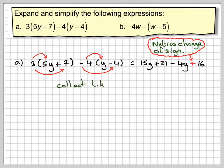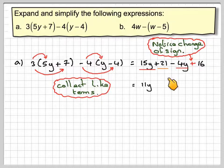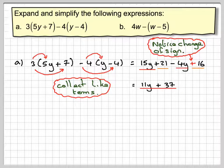Then we collect together like terms. We've got 15y minus 4y, that's going to make 11y. And then we've got plus 21 and plus 16, that's going to make plus 37.